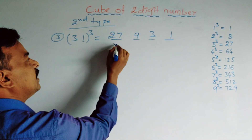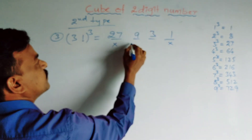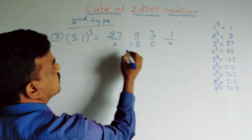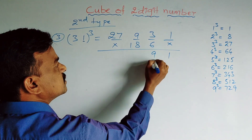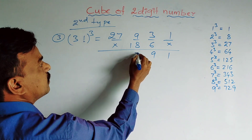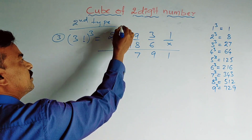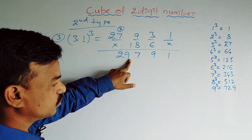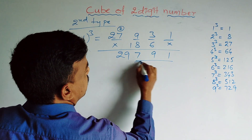Next two steps as usual: leave the first and last digits and double the middle numbers. Double of 9 is 18, double of 3 is 6. Now add: 1 as it is; 9 + 18 = 27, write 7 carry 2; then 27 plus 2 carry = 29. So 31³ = 29,791.